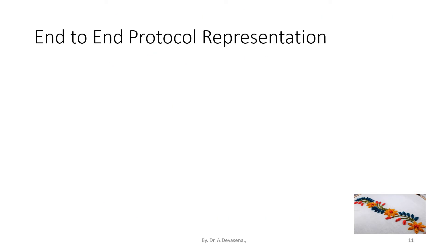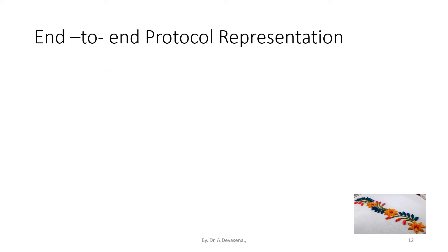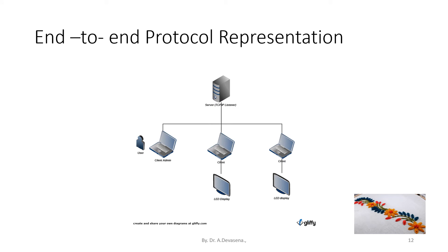End-to-end protocol representation is shown below. Here we have an end system server on one side and an end system client on the other side. In between the server and the client, we have base station routers, and through the routers, information is transferred from the server to the client. In another representation, the server is accessed by many users, that is, clients are connected to the server.